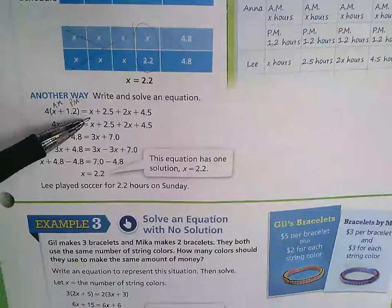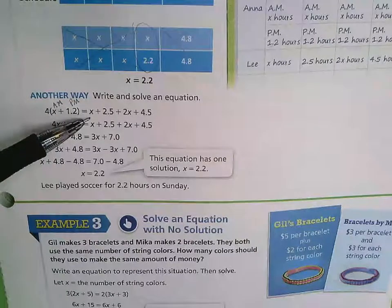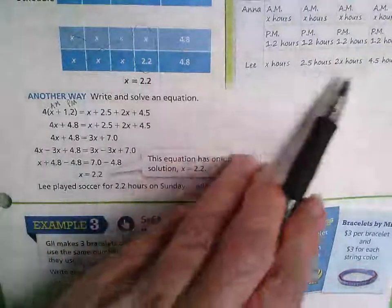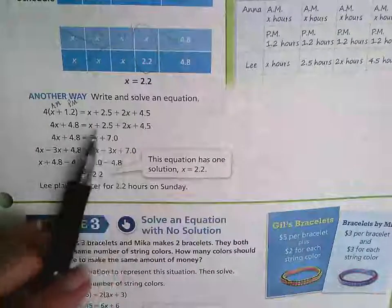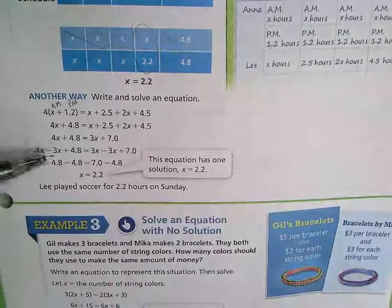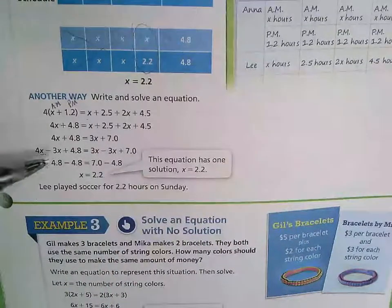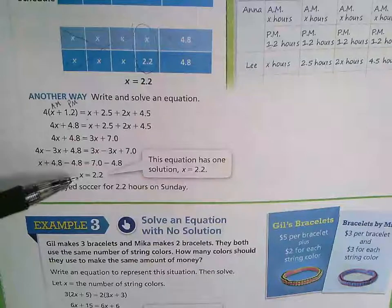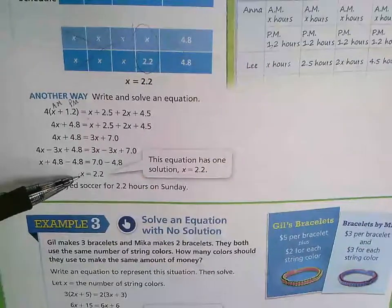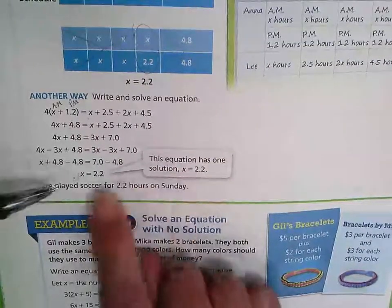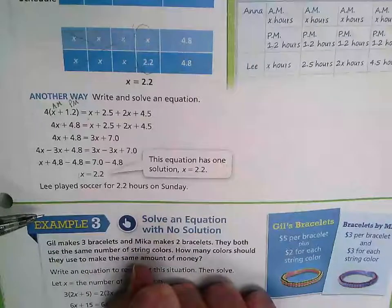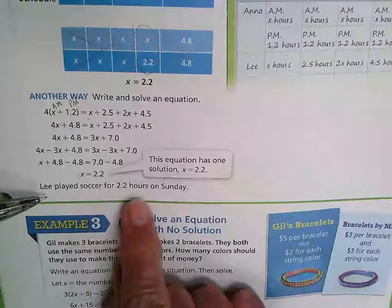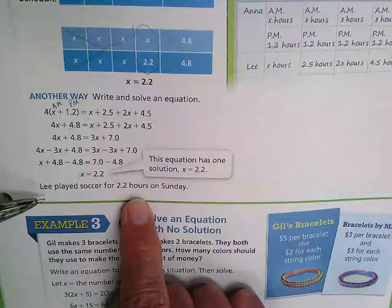And for Lee, they simply wrote down the quantities. And then they combine and solve the problem subtracting out X's from each side. And they get that X is equal to 2.2. So Lee played soccer for 2.2 hours on Sunday.